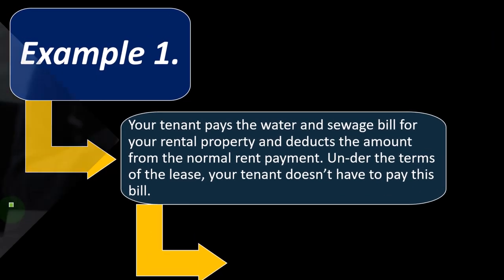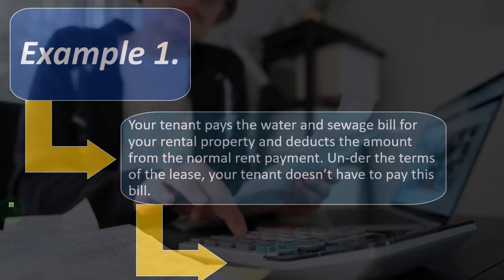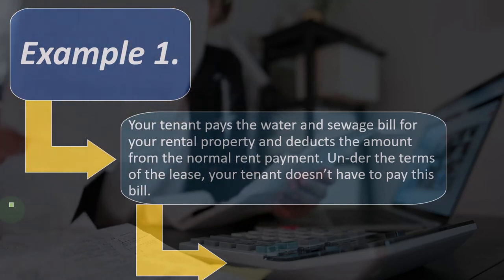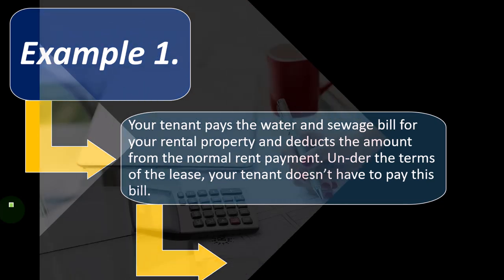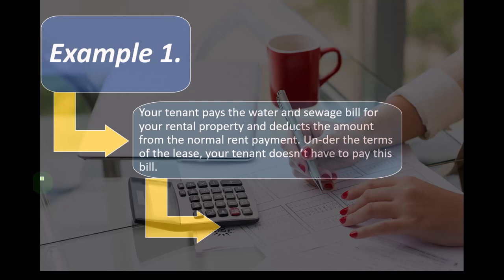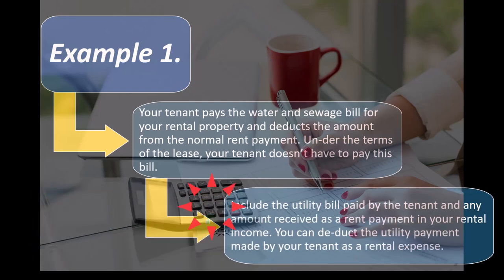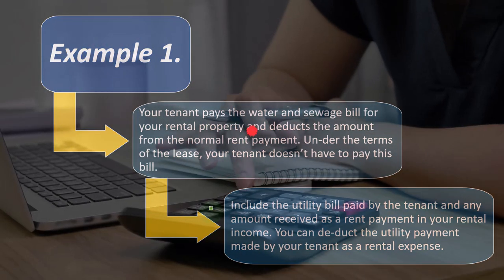Example: your tenant pays the water and sewage bill for your rental property and deducts the amount from the normal rent payment. Under the terms of the lease, your tenant doesn't have to pay these bills. In this case, you should record income for the full amount — including what the tenant paid — and then record the expenses for the water and sewage payments. The net result is the same: you'll have either a lower amount of income and no expense, or a higher amount of income and then the expense, with the net amount being the same but properly recorded.